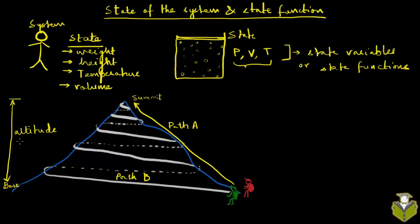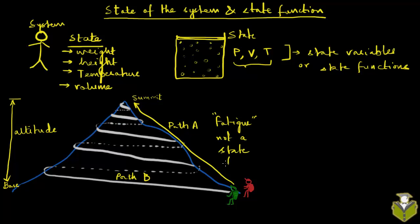Altitude is a state function — it is only going to depend on the starting state of the hiker and the end state of the hiker, and the net change in the state function is going to be the difference between the initial and final states. On the other hand, a person may or may not carry a heavy pack, or they may climb in hot or cold weather, and depending on all these conditions their fatigue levels might be different. So fatigue — the measure of how tired he or she is from the hike — will depend on which path the hiker takes. Fatigue is not a state function. Altitude clearly is a state function: it doesn't matter which path the hiker takes, as long as the starting and final states are the same, the change in altitude is going to be the same.